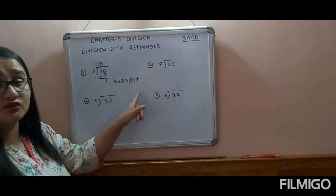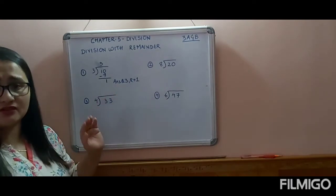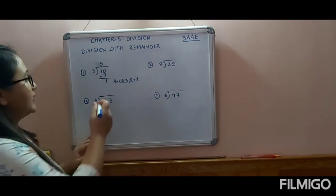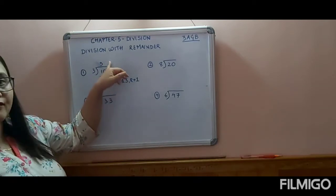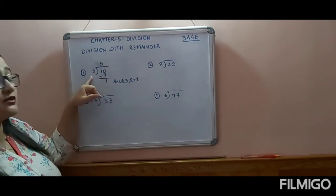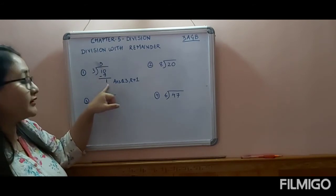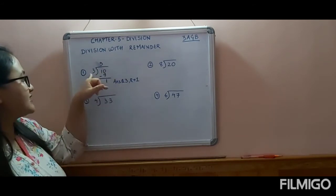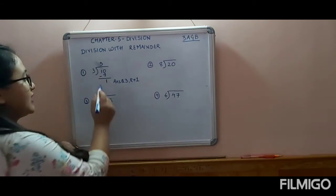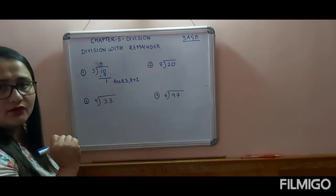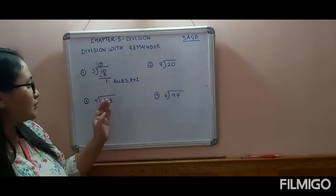In division with remainder you can check your answer: multiply the quotient by the divisor, then add the remainder — you should get back the dividend. So 3 times 3 is 9, plus 1 is 10. You get your dividend back, so the answer is correct.